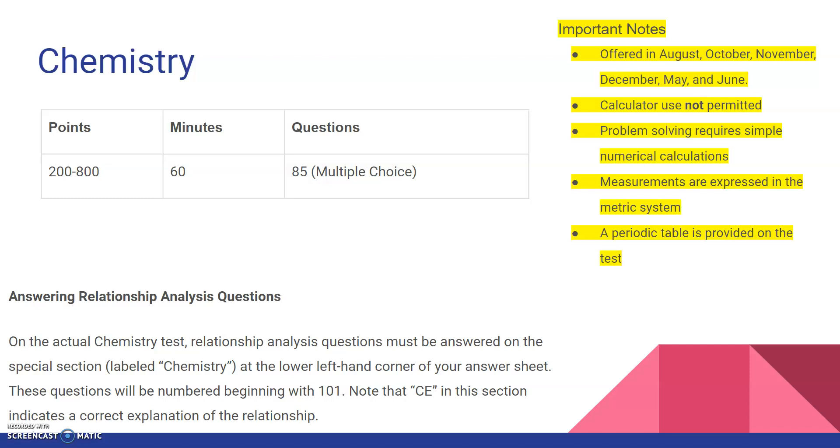There are special types of questions on the chemistry subject test that I want to address. They're called the relationship analysis questions. You're going to get two statements, and you're going to have to say whether statement one is true or false, whether statement two is true or false. If statement one is true and statement two is true, you've got to see, is statement one true because of statement two? It's a relationship analysis question where you have to understand if statement one is a correct explanation of statement two. I'll try and get some examples for you guys, but you're going to have to check these relationship analysis questions for yourself. There are special types of questions only in the chemistry subject test.